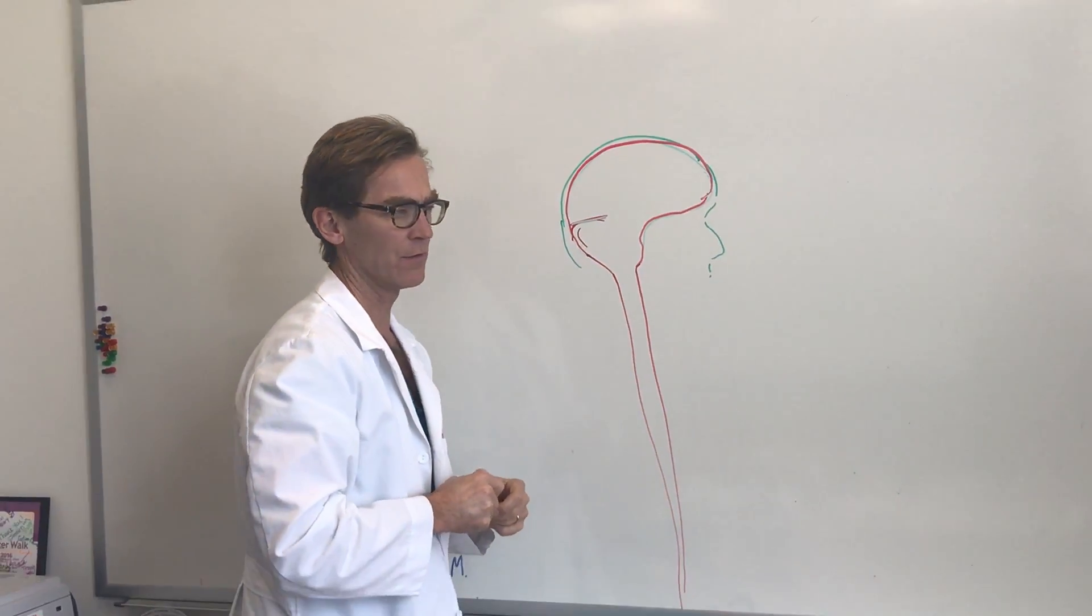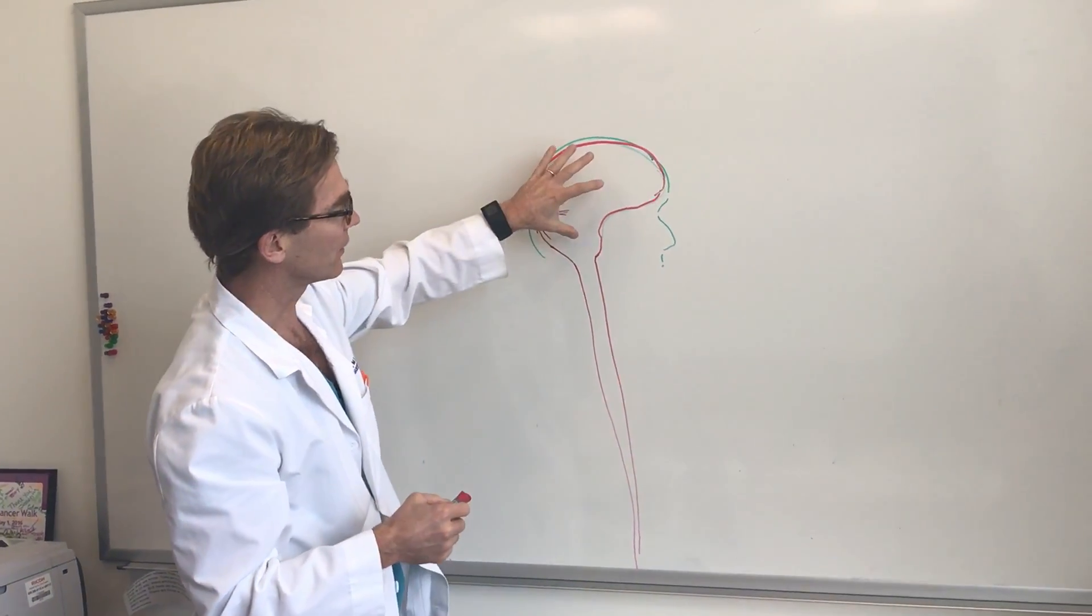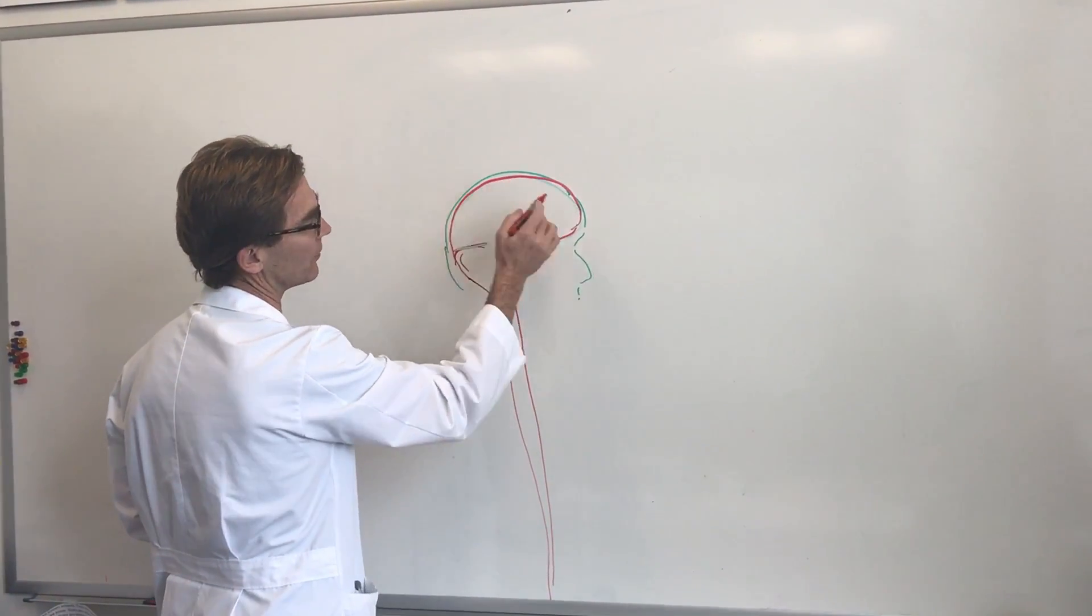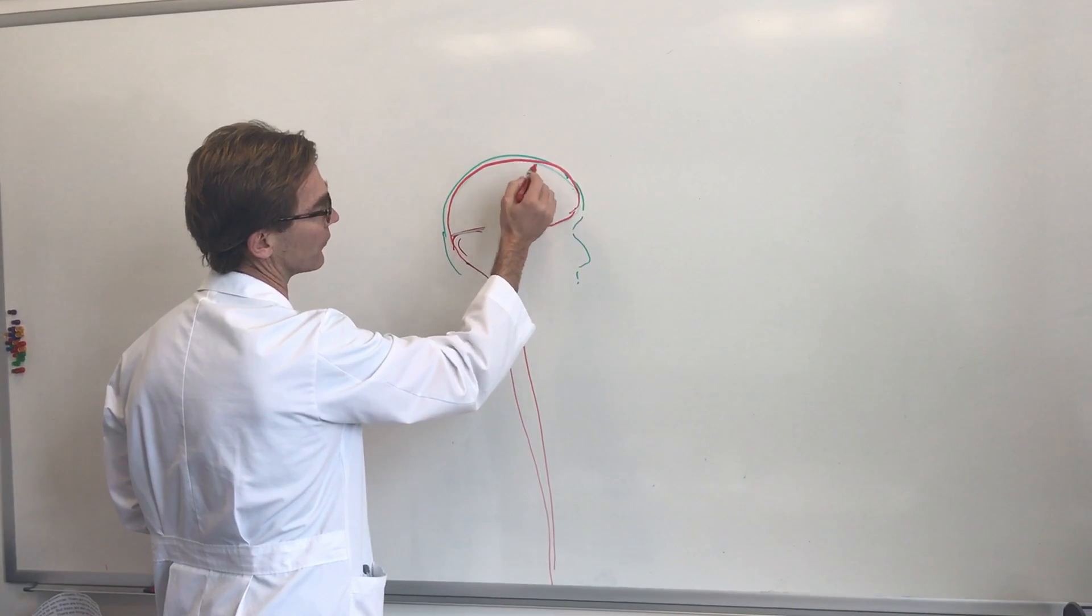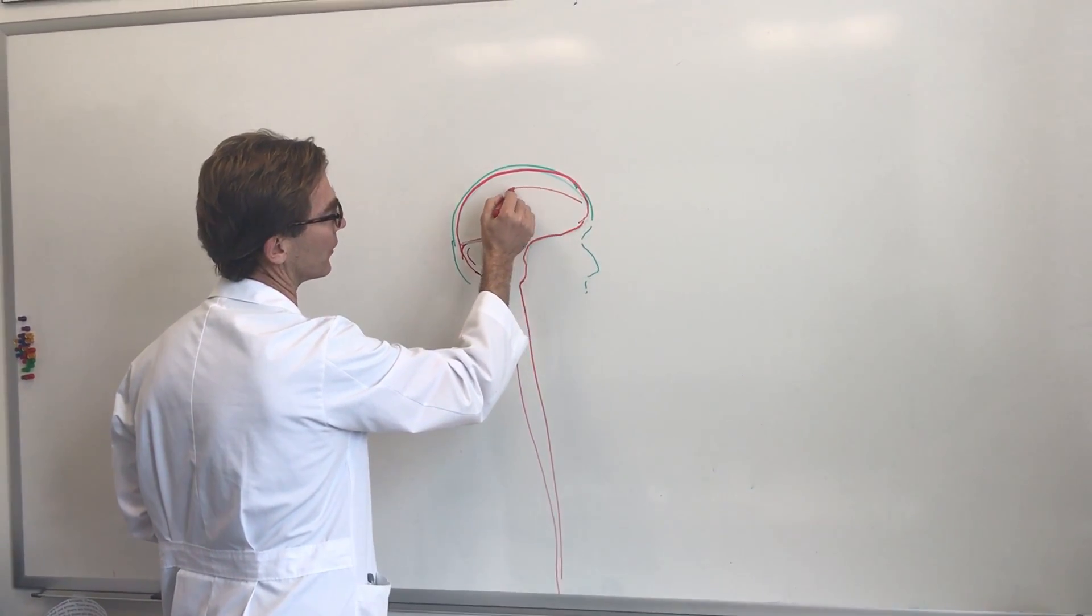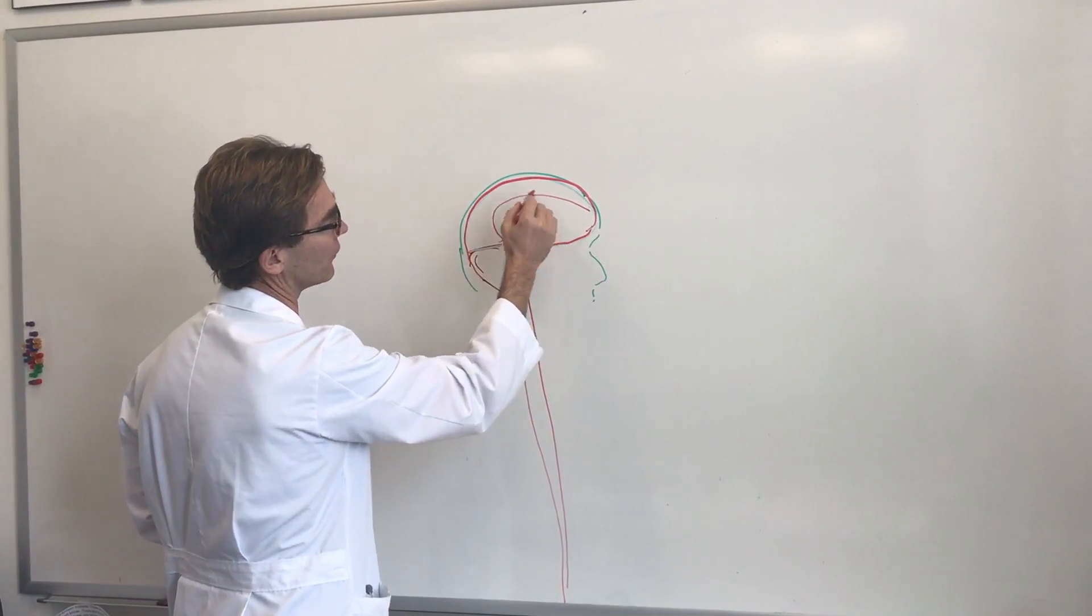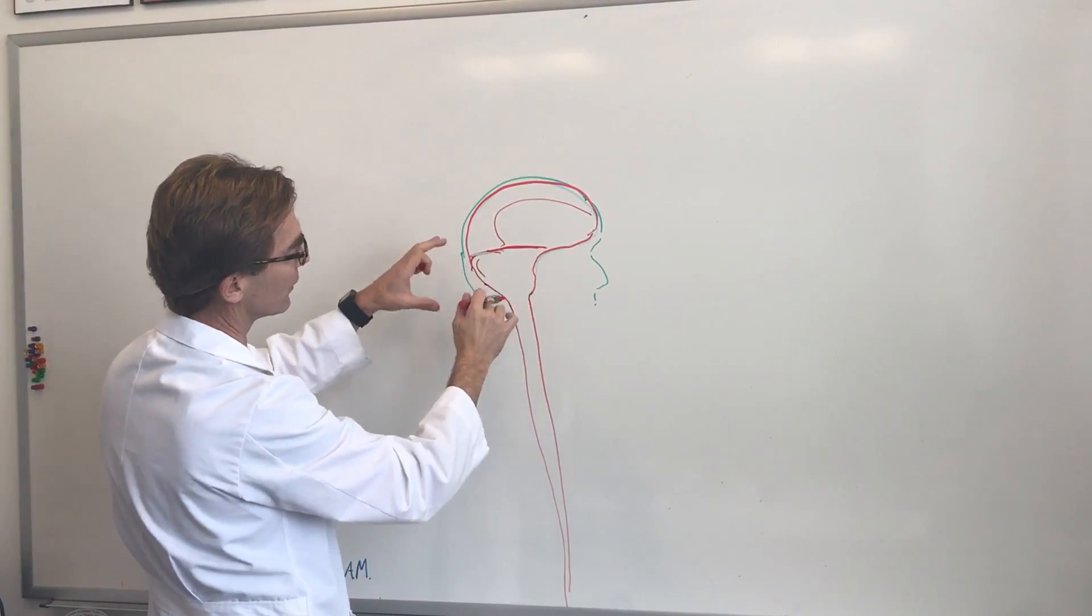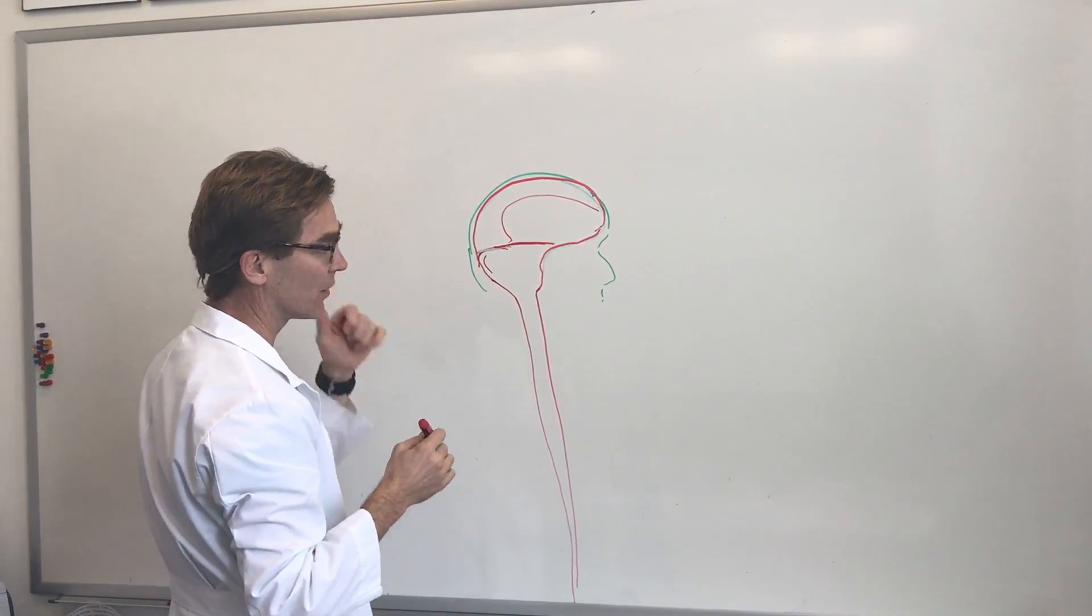Typically we see meningiomas often in association with the brain because the brain is enveloped by dura. In the middle of the brain there's a part of the dura that comes in called the falx, and there's the tentorial dura, so anywhere along here or the skull base you can get a meningioma.